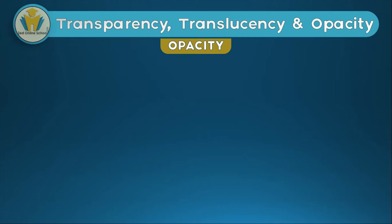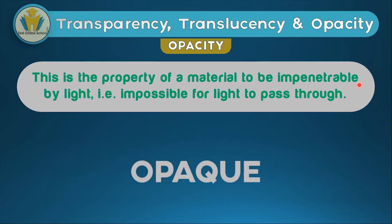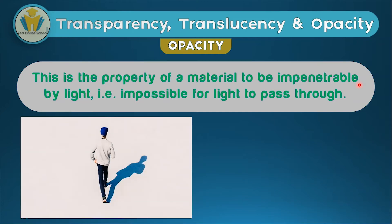Another thing you should know about is opacity. Opacity is the property of a material to be impenetrable by light. Objects that have opacity will not allow light to pass through them — it's impossible for light to pass through such objects. An object that shows opacity is called an opaque object. Things like wood, the wall of your room, and most metals are examples of opaque objects.